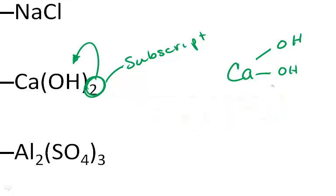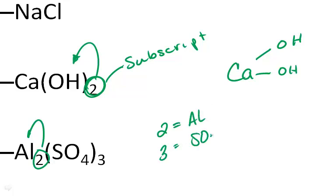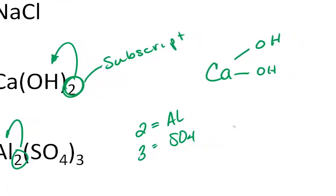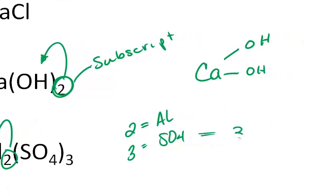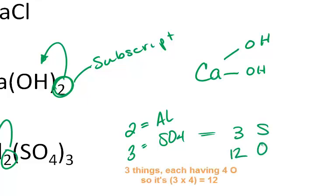In our bottom example, Al₂(SO₄)₃ tells us that there are two aluminums and three SO₄ groups. If we break that down even further, that means there are three atoms of sulfur and twelve atoms of oxygen in the compound.